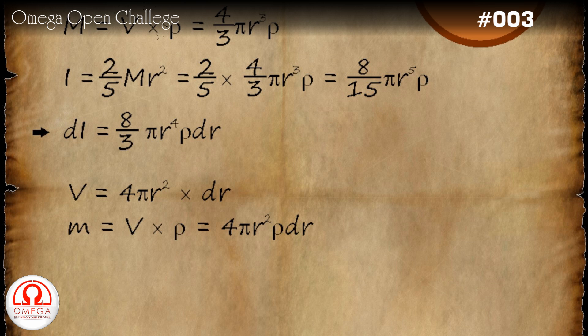Putting 4 pi r square into rho dr as mass in the expression for moment of inertia, we get moment of inertia of shell as 2 by 3 m r square. This is our answer.